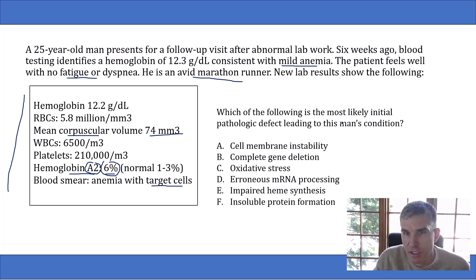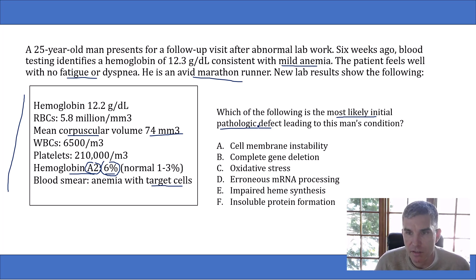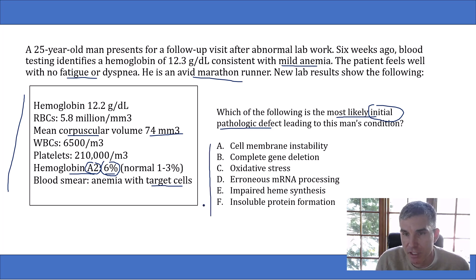Now let's look at the question. It asks which of the following is the most likely initial pathologic defect leading to this man's condition. What leaps off the screen at me is the phrase 'initial pathologic defect.' That's a very strange term. The fact that the question writer chose to ask for the most likely initial pathologic defect makes me think that many of these answer choices are going to be actual pathologic defects present in beta thalassemia, but they only want the one that is the initial one.